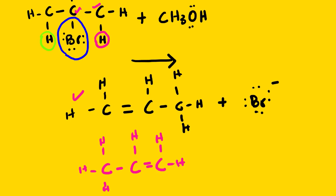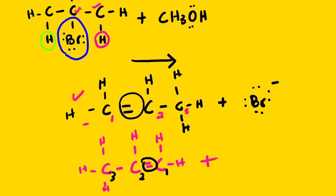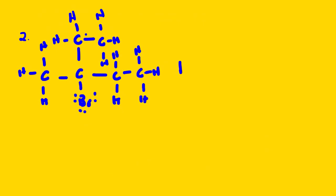Starting to count from this structure: one, two, three. For the other structure, counting from the other end: one, two, three. The double bond is between the first and second carbon in both cases, so it's propene — the answer is the same. Now we are going to look at an example where we can have a more substituted product compared to the other one. Let us look at the next structure, which we react with methanol.